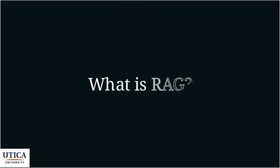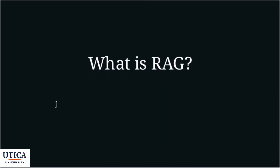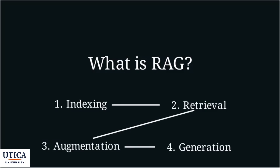RAG solves these problems by giving LLMs access to a relevant knowledge base before they generate a response. The RAG process involves four key steps. First, indexing — preparing the knowledge base. Second, retrieval — finding relevant information based on the user's query. Third, augmentation — combining the retrieved information with the original query. And finally, generation — using the augmented prompt to generate a response with the LLM.